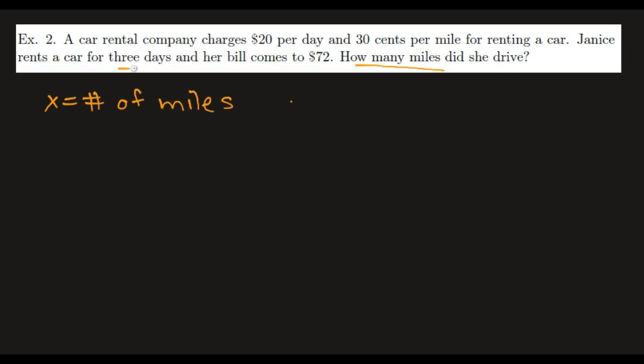$20 per day. She rents it for 3 days. So we have 20 times 3 as part of our cost. Plus 30 cents a mile. Be careful. $20. So 30 cents needs to be represented as 0.30 times the number of miles. Our total is 72. So we've set up our model. Now we need to solve. So this is 60. So we subtract 60 from both sides and we have 12. So x is 12 divided by 0.30.